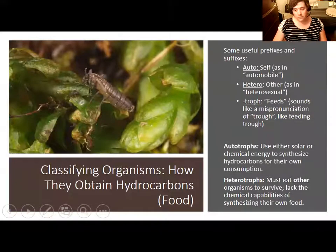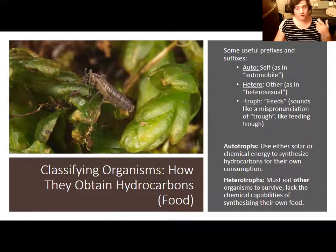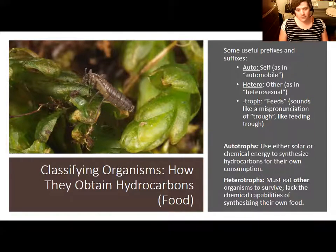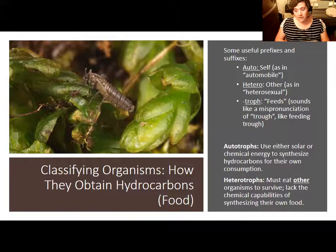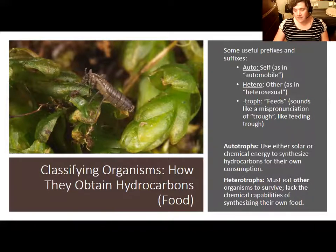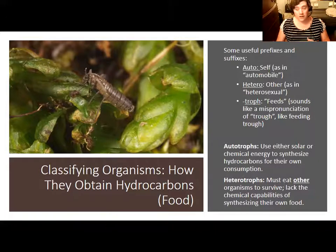One of the first definitions we need to make is how organisms obtain hydrocarbons — or fundamentally, sugars. All life on Earth is carbon-based and depends on hydrocarbons to obtain energy. Some organisms can synthesize hydrocarbons themselves. These are known as autotrophs — from 'auto,' meaning self, and 'troph,' meaning to feed. Autotrophs generally do not need to consume other organisms to obtain hydrocarbons. They are organisms like plants, which use solar energy, or some extremophiles that use chemical energy. In either case, they are making the food themselves.